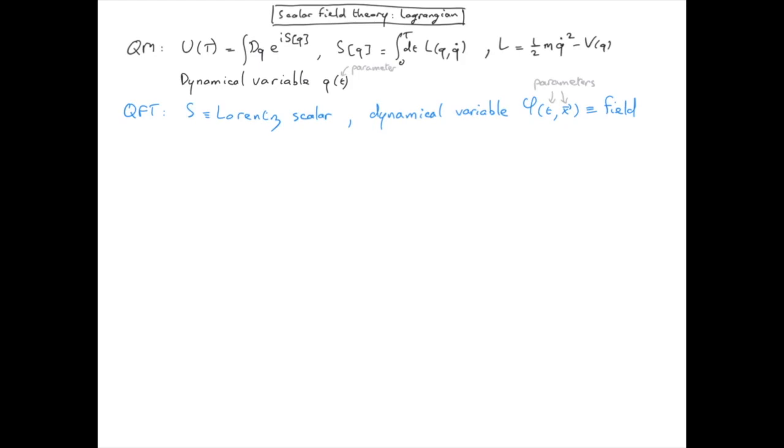So far, the field is an abstract object. We haven't specified what it represents physically. Nevertheless, you have already encountered an example of fundamental field previously, the case of the electromagnetic field. So you can think of phi as something analog to the amplitude of the electric or the magnetic field. However, to describe an electromagnetic field, you will need a four vector. We will start with something simpler. We will take the case of a scalar field.